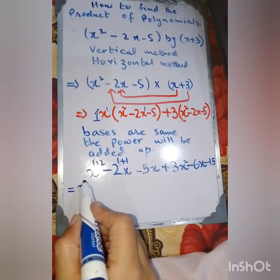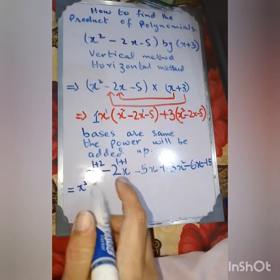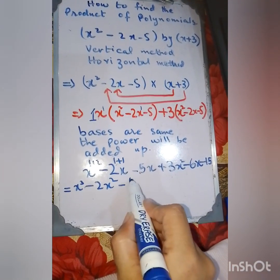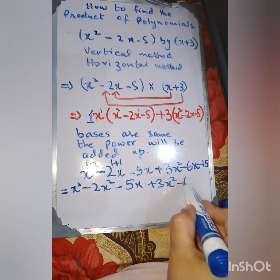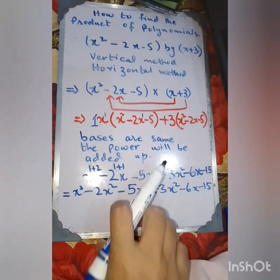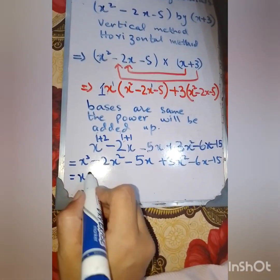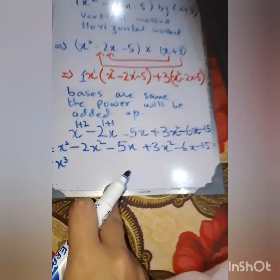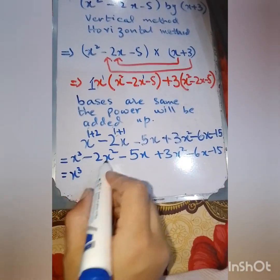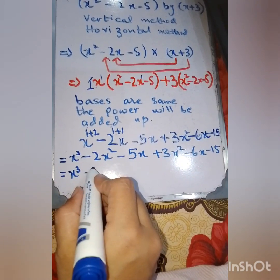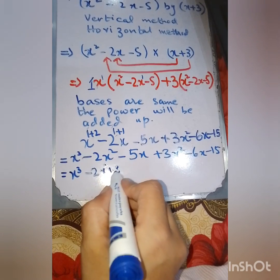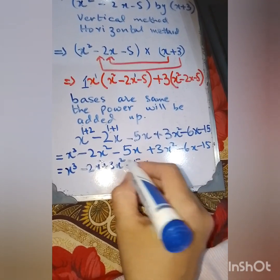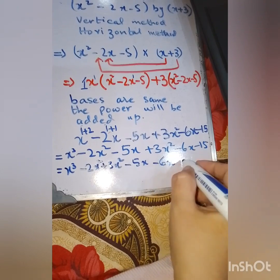Now we have: x cubed minus 2x squared minus 5x plus 3x squared minus 6x minus 15. Next we are going to arrange and simplify. x cubed remains the same. Then minus 2x squared and plus 3x squared are written together, minus 5x and minus 6x are written together, and minus 15 is the constant.